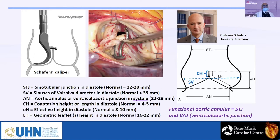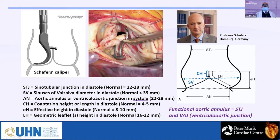Dr. Schaefer suggested measuring the effective height of the leaflet. He developed a caliper placed at the leaflet base, measuring from the virtual aortic annulus to the tip of the leaflet. This effective height should be more than nine millimeters in normal people. Anytime the effective height comes below that line during TEE, the leaflet has a prolapse. When the tip comes below the annulus line — negative effective height — that is severe prolapse, as in the case I showed.